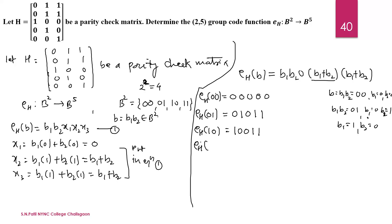Now the encoding function operates on the last element (1,1). The first two digits are 1,1 as they are. The third is 0. Now the fourth element: b1 + b2 = 1 + 1 = 0. Similarly, the last element is also 1 + 1 = 0. So E_H(1,1) = (1,1,0,0,0).